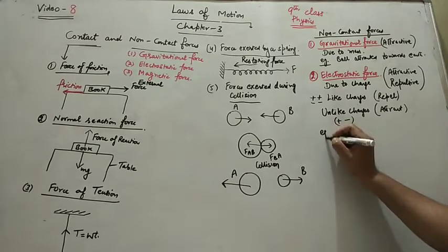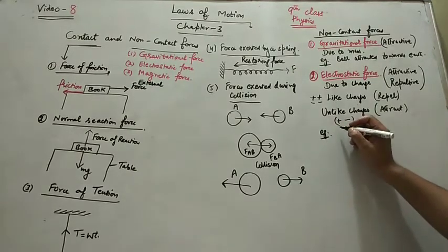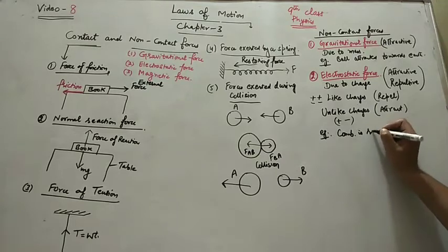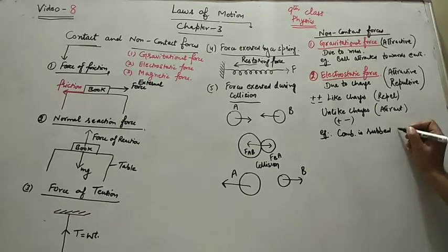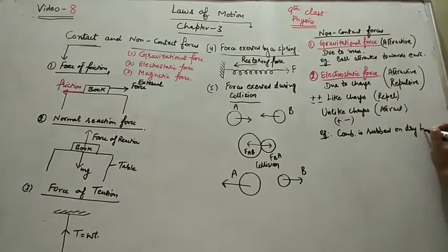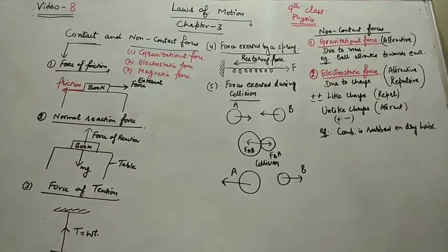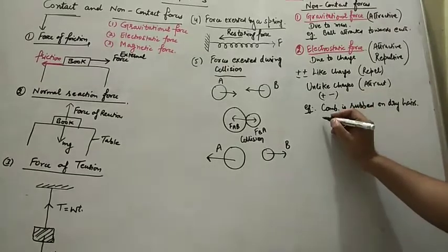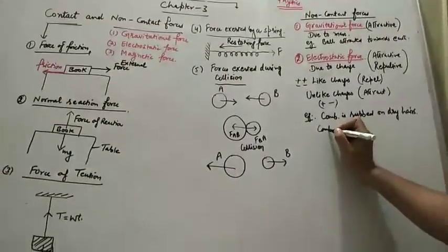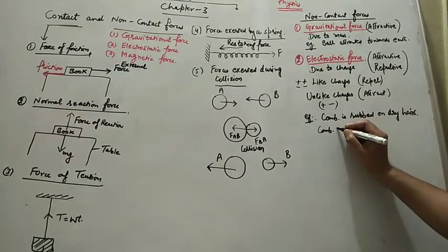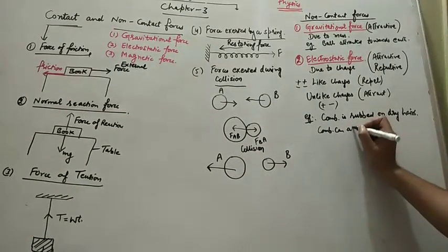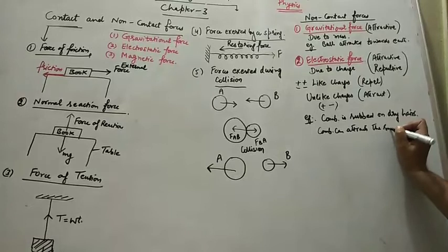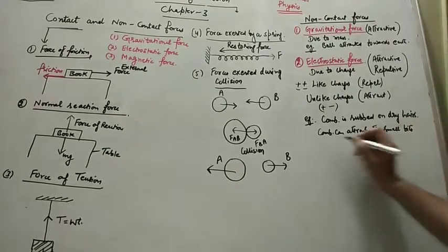For example, when comb is rubbed on dry hairs, comb will get electrified. Electrified means get charged. And comb can easily attract the small bits of paper.